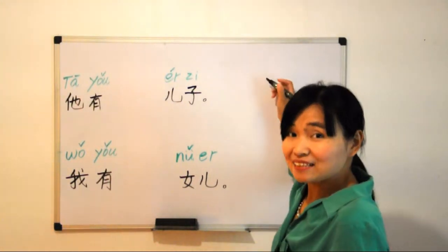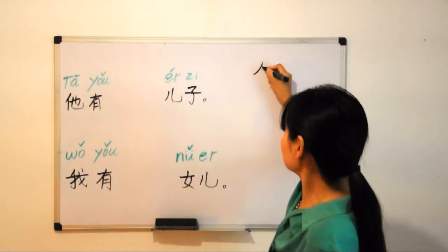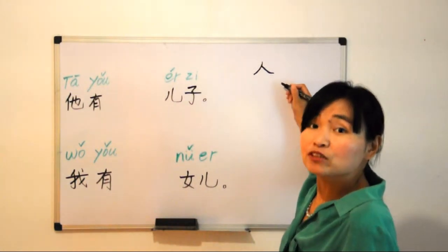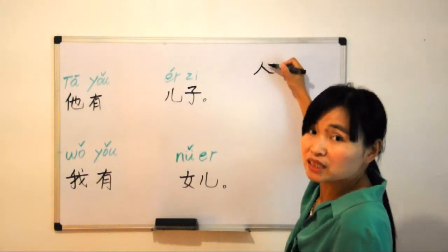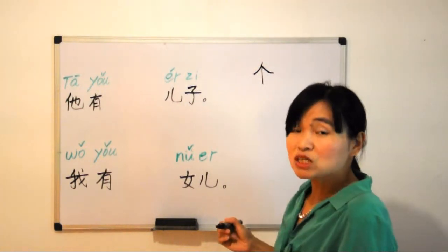Do you remember how to write Ren? Person - left stroke and right stroke, right? This is the Ren. So we just add another vertical stroke, then it will be ge. Vertical here, right? So ge.